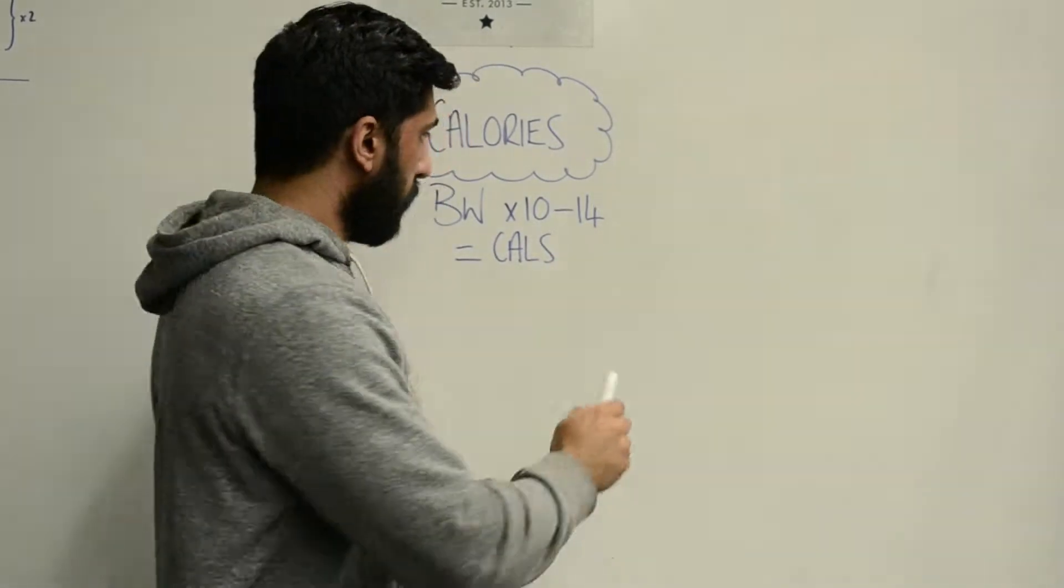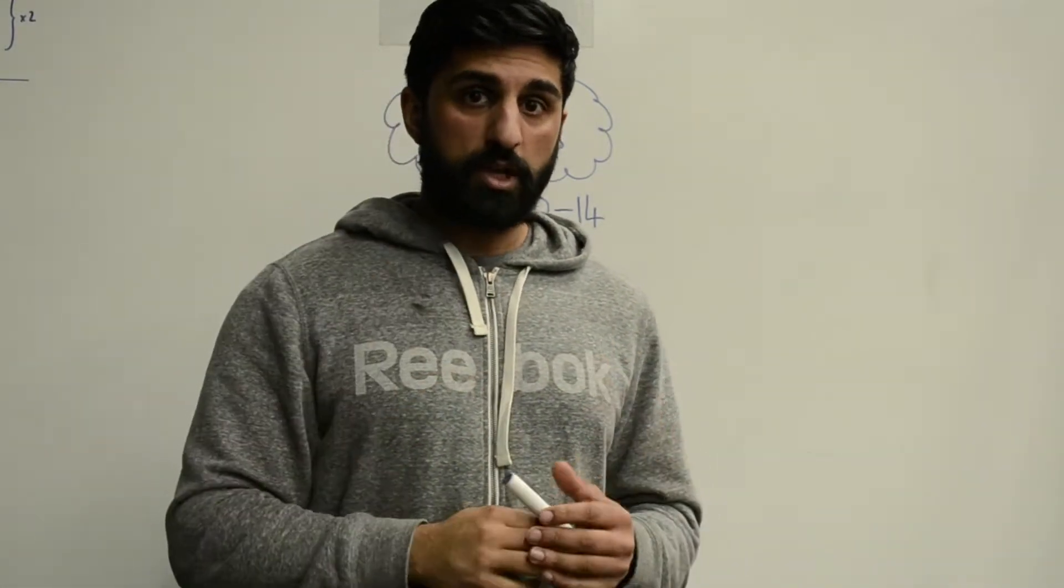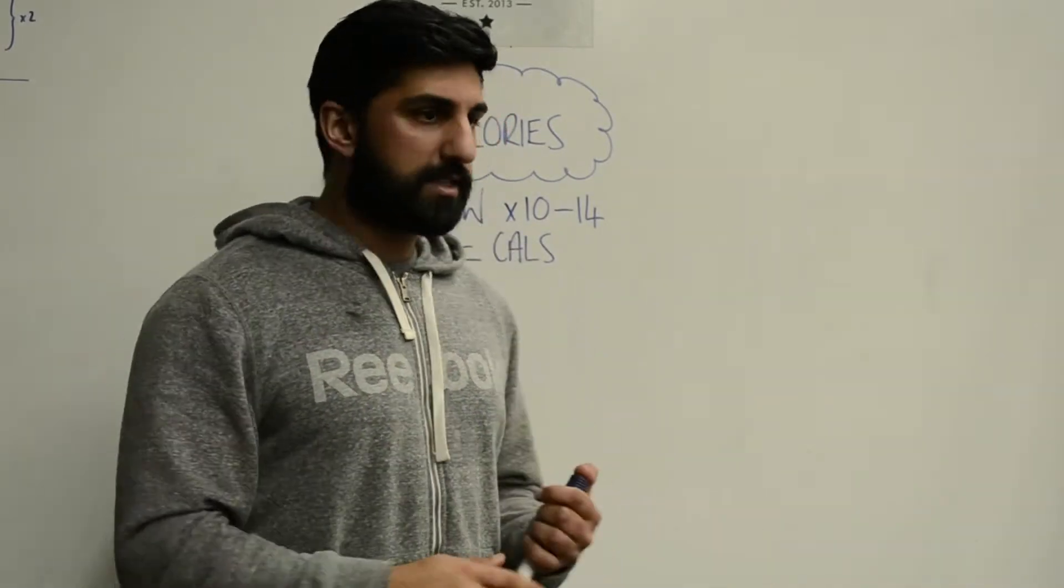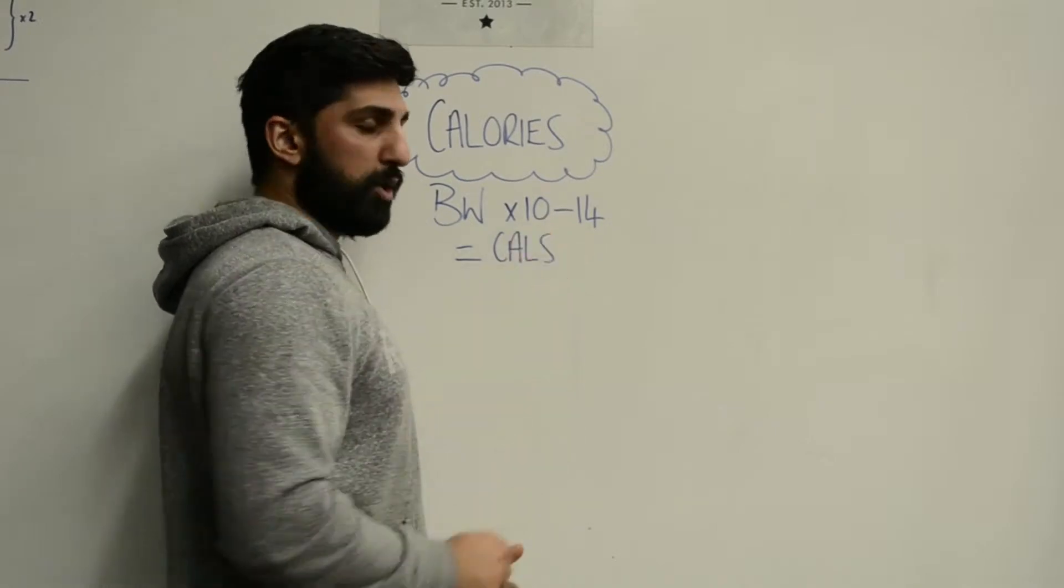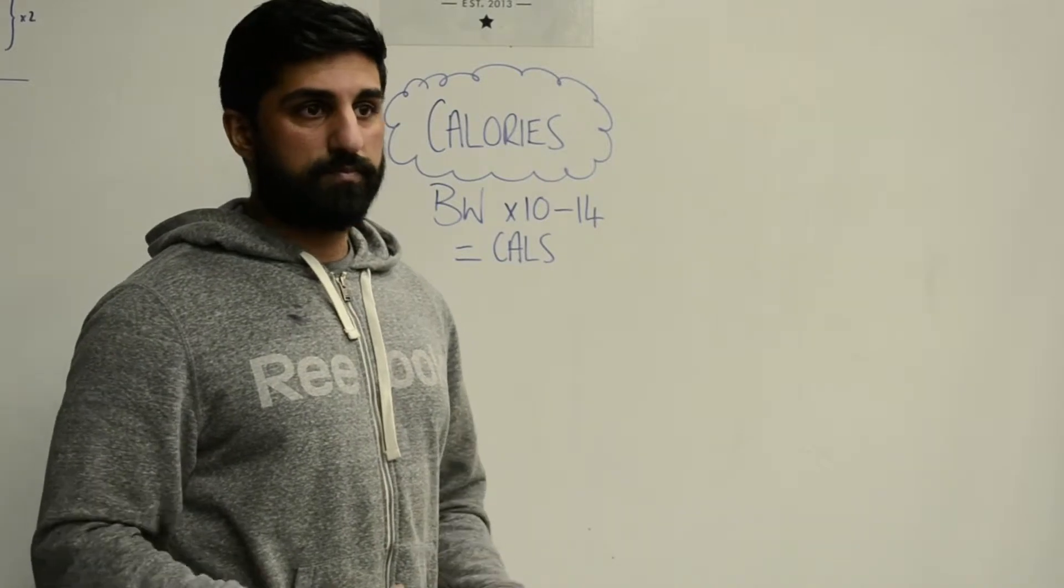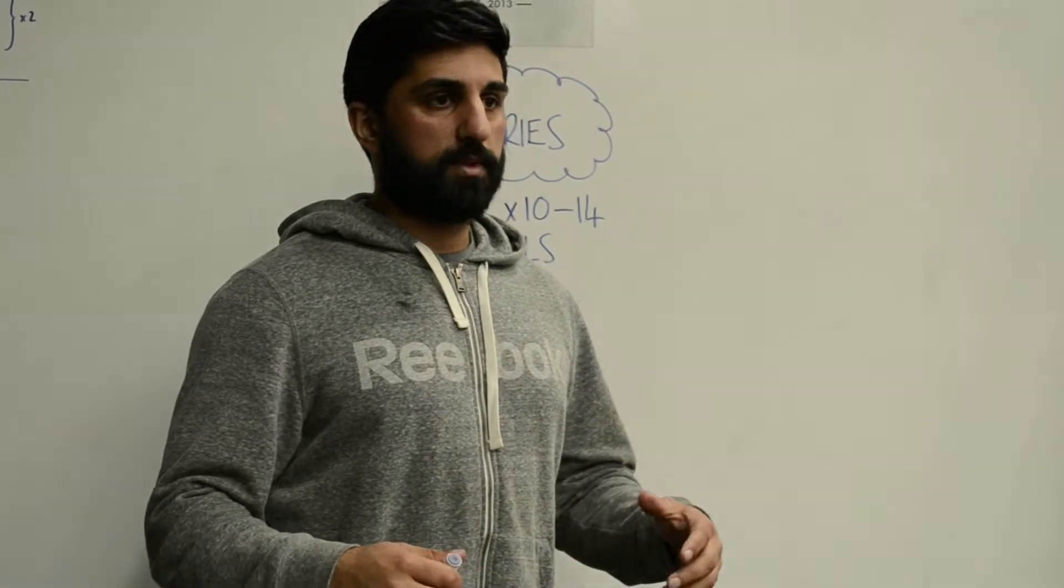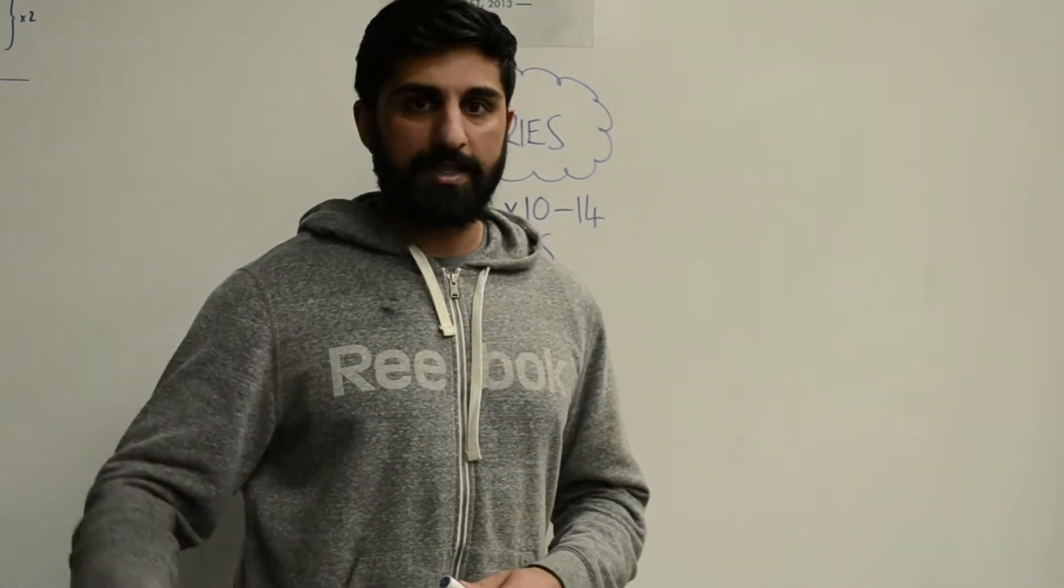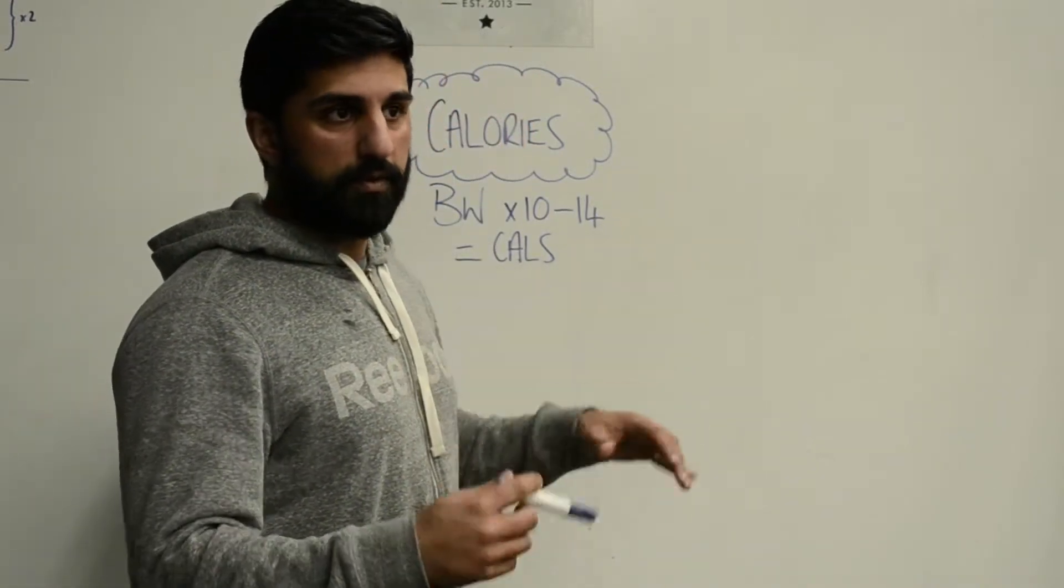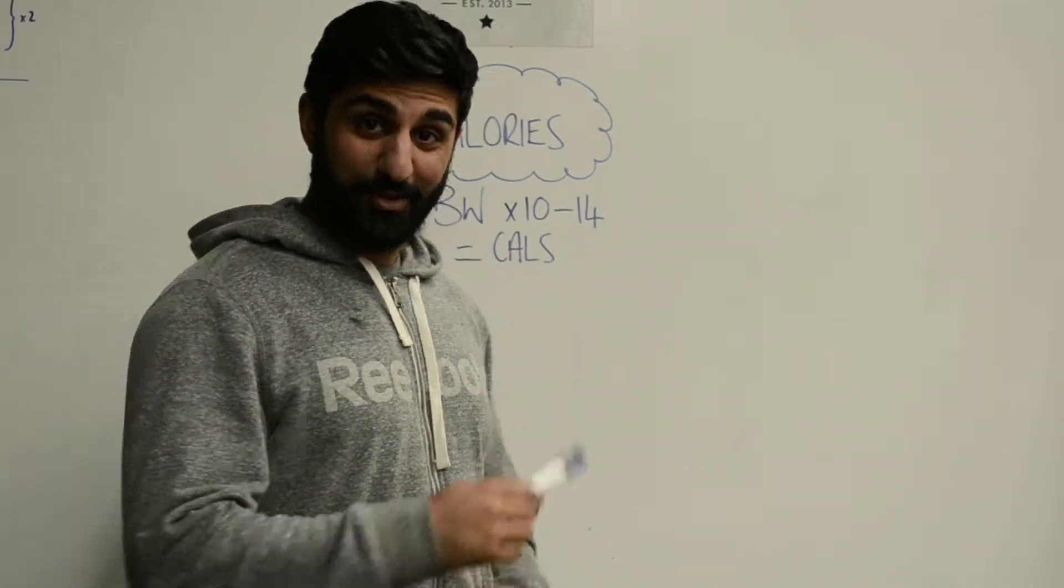The way you're going to decide where you are on the scale of 10 to 14 is based on your activity level. If you have a sedentary job where you're sat at a desk all day doing no exercise, you're going to multiply your body weight in pounds by 10. The top end of the scale, if you're training twice a day or you're a postman that walks loads of miles a day and you exercise, so you're super active, then you multiply your body weight in pounds times 14. If you're somewhere in the middle, then you can use 11, 12, and 13 as well.